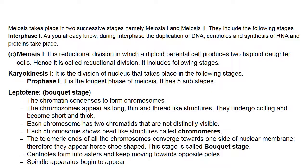The five sub-stages of prophase I are: leptotene, zygotene, pachytene, diplotene, and diakinesis. In leptotene (also called the bouquet stage), chromatin condenses to form chromosomes appearing as long thin thread-like structures that undergo coiling and become short and thick. Each chromosome has two chromatids not distinctly visible, and each chromosome shows bead-like structures called chromomeres. The telomeric ends of all chromosomes converge towards one side of the nuclear membrane, making them appear horseshoe-shaped. Centrioles form asters and begin moving towards opposite poles, and the spindle apparatus begins to appear.